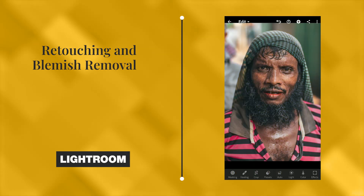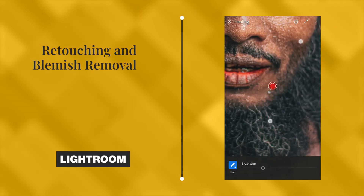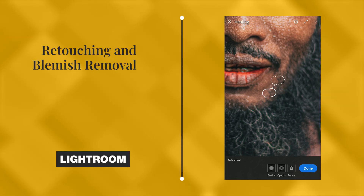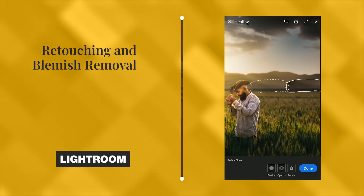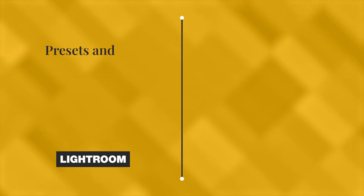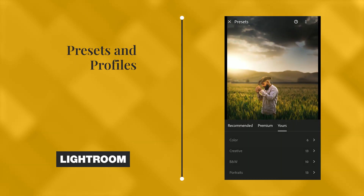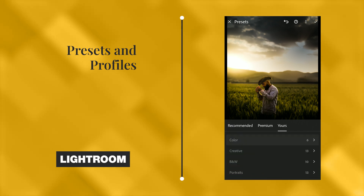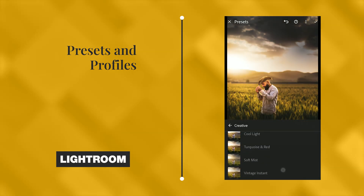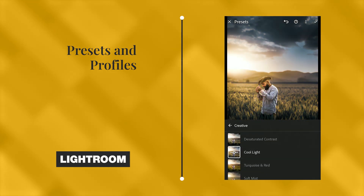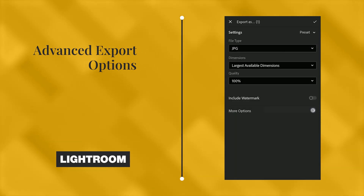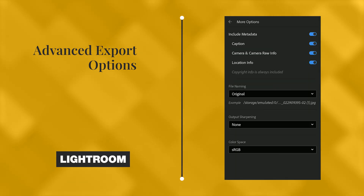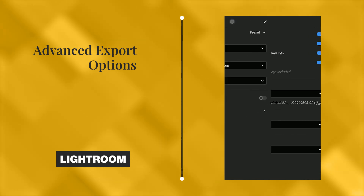Lightroom includes a range of retouching and blemish removal tools such as clone and heal, spot removal and red eye correction. It also has a range of predefined presets and profiles that you can use to quickly apply specific looks to your photos. Additionally, Lightroom allows you to export your edited photos in a variety of formats and resolutions, with a range of options for file naming, metadata and color space.